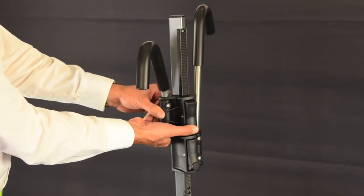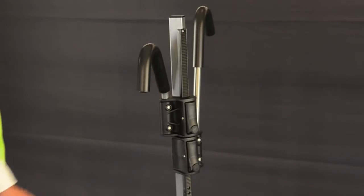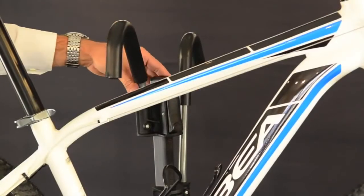The hooks slide along this nylon strip. The ratchet comes down onto the top tube of the bike securing it in place as pictured.